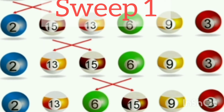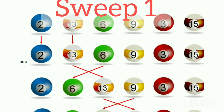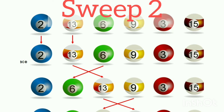In Step 4, we compare 15 and 9. Since 9 is less and 15 is greater, we exchange the values again. In Step 5, we compare the last two values — 15 and 3. Since 3 is less than 15, we swap their positions: 3 moves to where 15 was and 15 moves to the end. This is the end of Sweep 1. Now we start Sweep 2.